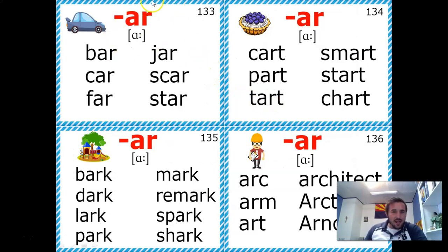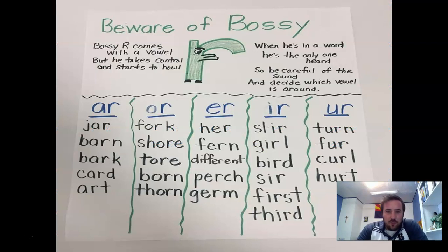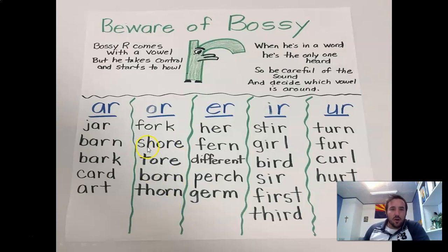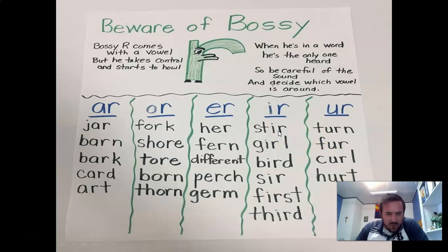AR we did go through last week. But when you go through all these different words, you really just gotta know. So when you spell shore — OR — girl, G-I-R-L, fur, F-U-R, you can kind of make out the OR, ER, ER. But that R just kind of dominates the sound, which is again why it's called the bossy R.